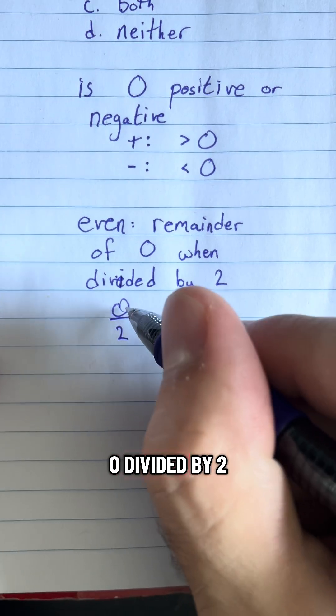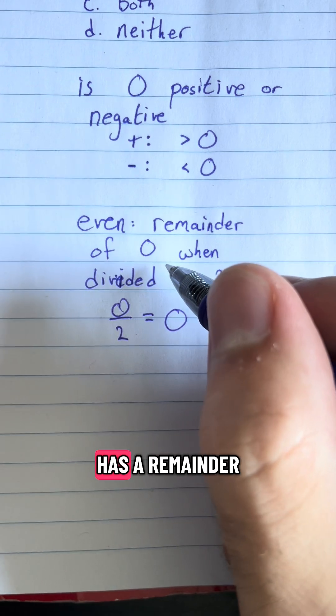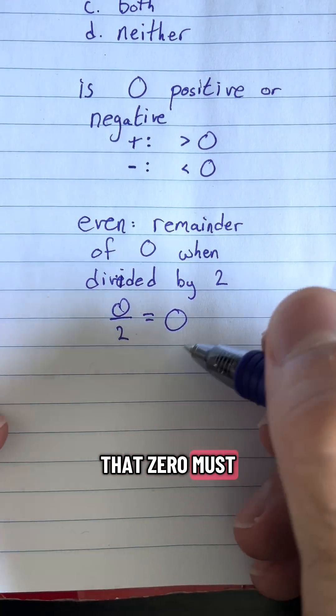And if you divide zero divided by two, well, zero divided by anything is just zero. And since it has a remainder of zero when you divide it by two, then this means that zero must be even.